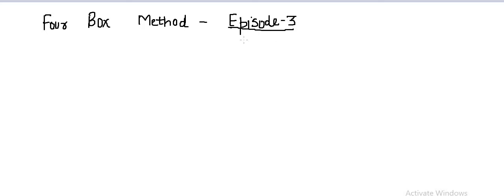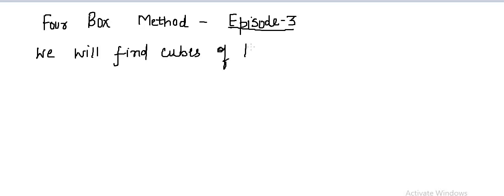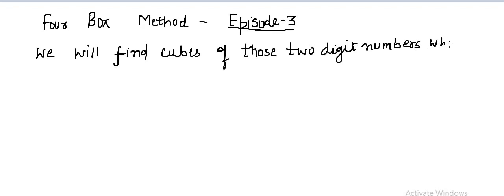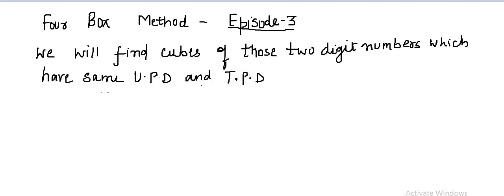This is the third episode in which we will find cubes of two-digit numbers which have the same unit place digit and tens place digit — for example, numbers like 11, 22, 33, and so on.